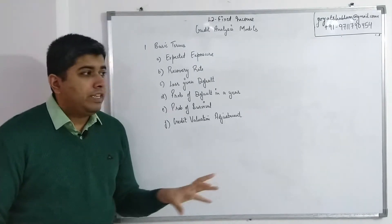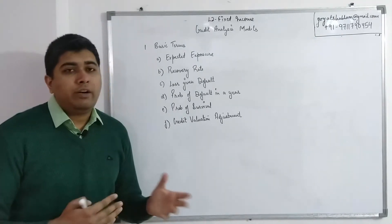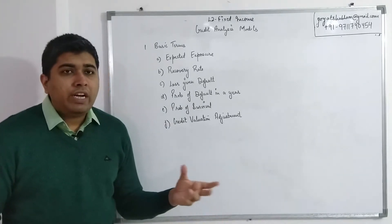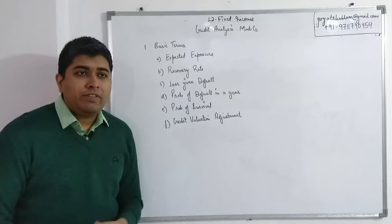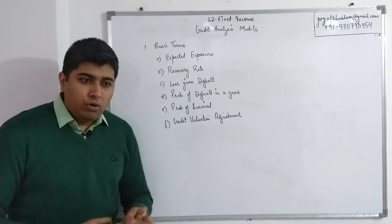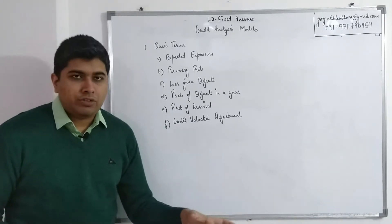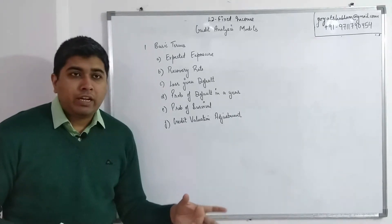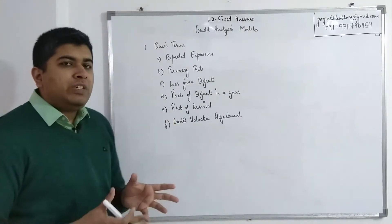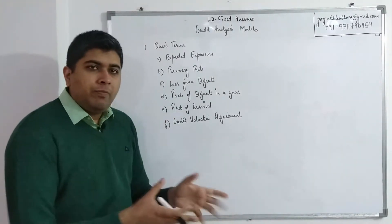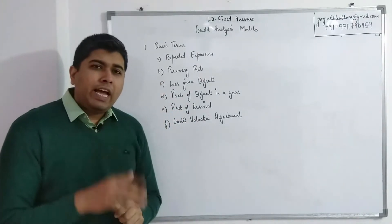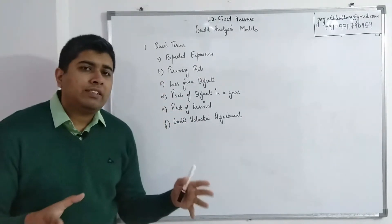Expected exposure is simply the total amount which could be exposed to a credit risk. For example, if a bank gave a loan of $100 million and the other party defaults on their payments, the bank will have all $100 million at risk of being lost. So whatever the total amount is which gets exposed to the risk, that is known as expected exposure.